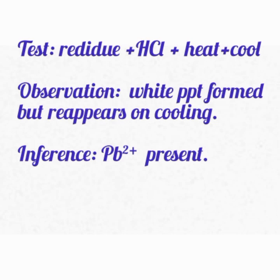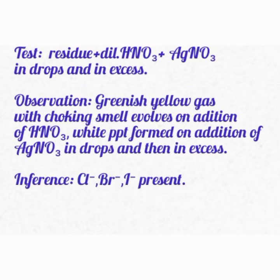For the second test — residue plus HCl — you heat and then allow to cool. The observation is that a white precipitate forms on addition of HCl. When you heat it, the white precipitate disappears, but reappears on cooling. This indicates that lead ion (Pb²⁺) is present.